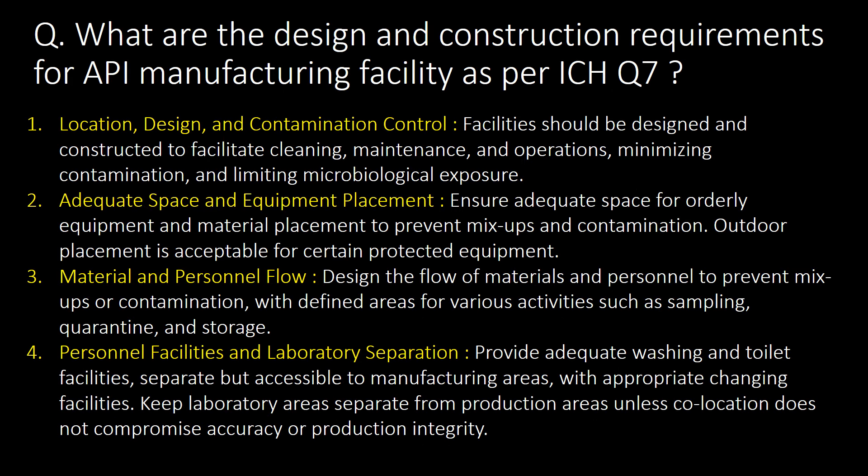What are the design and construction requirements for an API manufacturing facility as per ICH Q7? The four important design and construction requirements are: first, location, design, and contamination control; second, adequate space and equipment placement; third, material and personnel flow; and fourth, personnel facilities and laboratory separation.